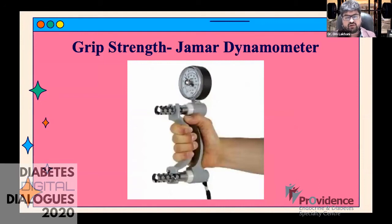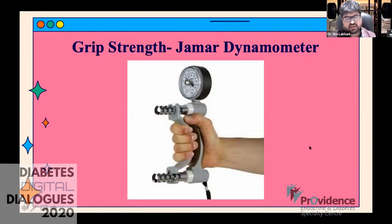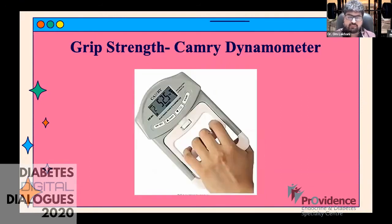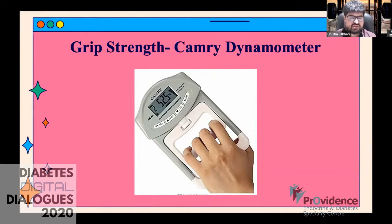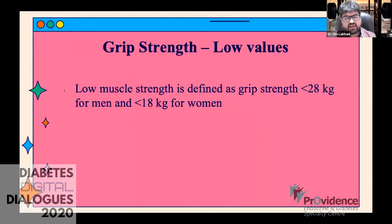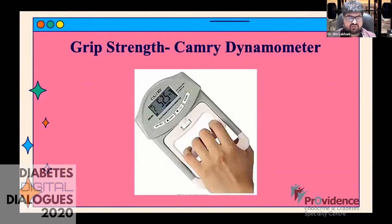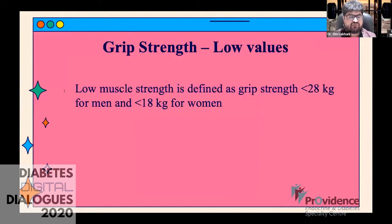You can also use a Jamar dynamometer or a Camry digital dynamometer for grip strength. These are available on Amazon for less than a thousand rupees and are very useful for clinical studies on sarcopenia. It takes about 20 seconds to make the assessment. A grip strength of less than 28 kg for men and less than 18 kg for women is generally considered low.